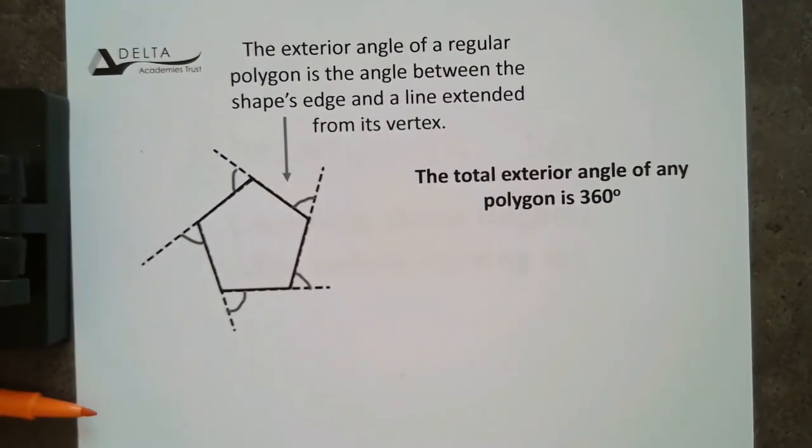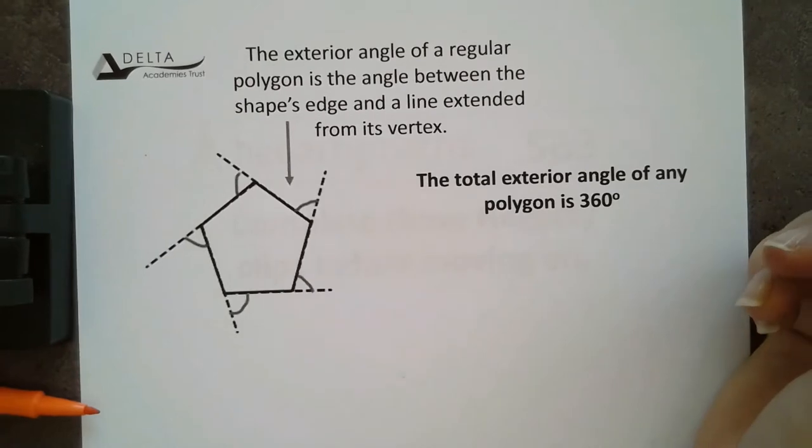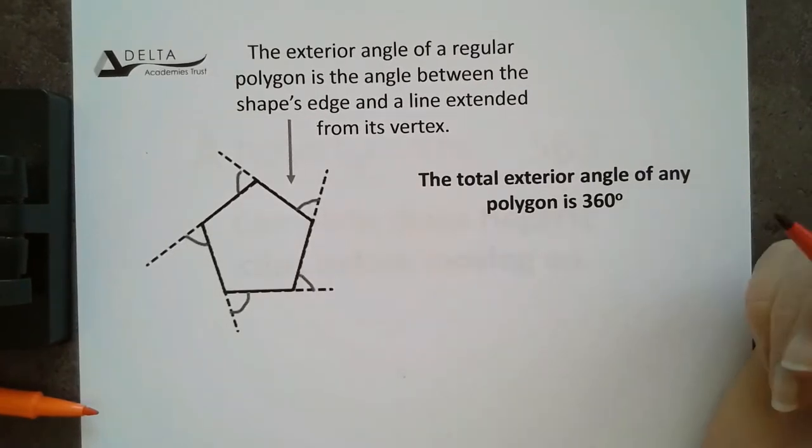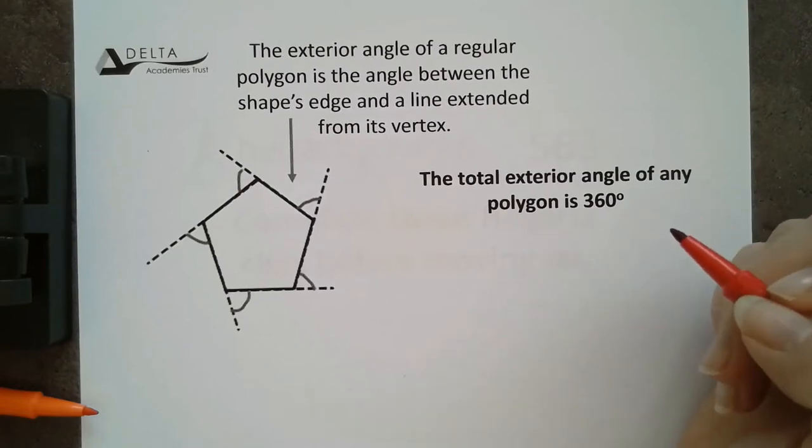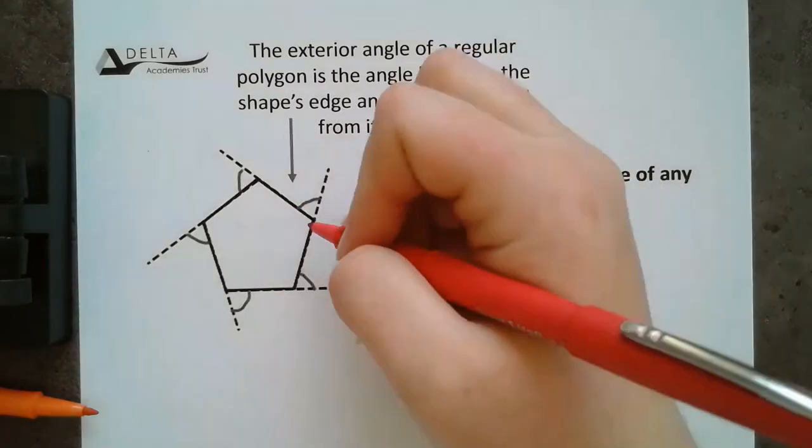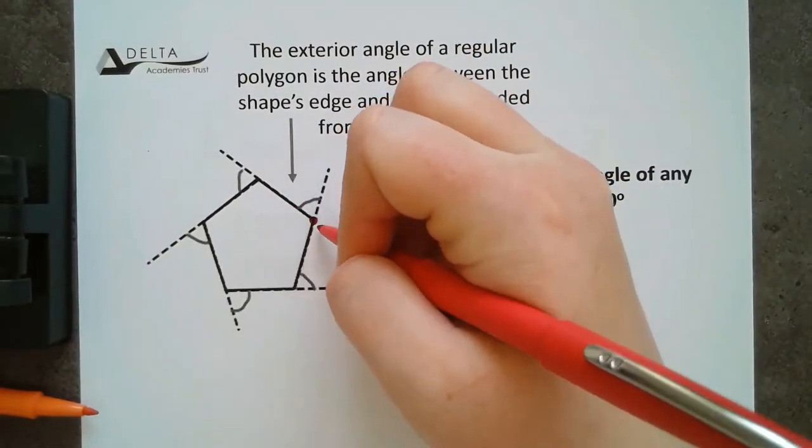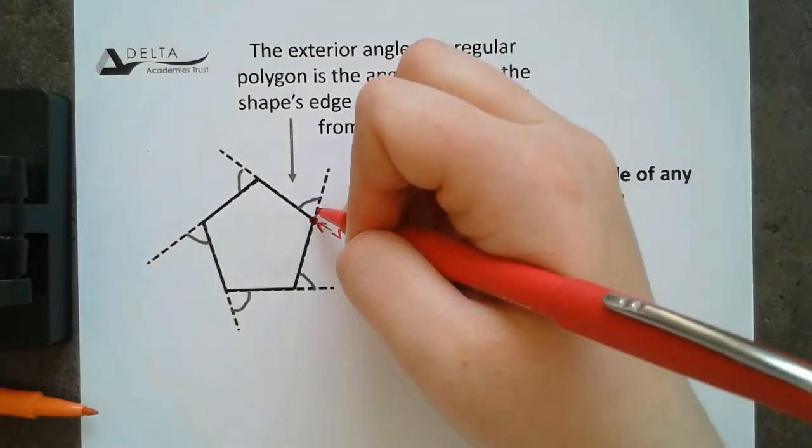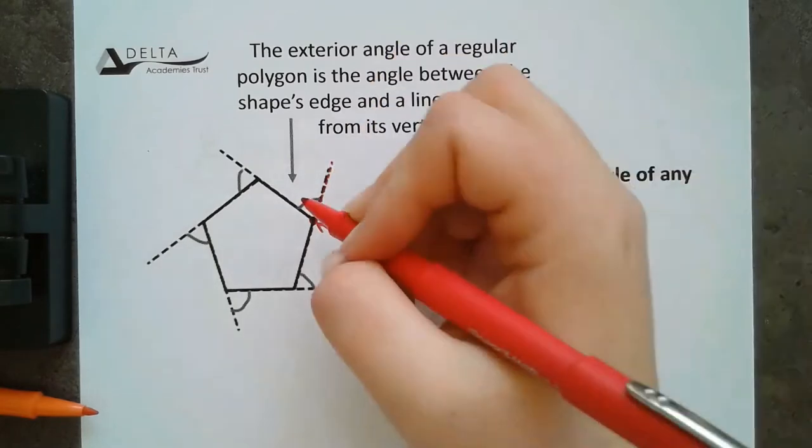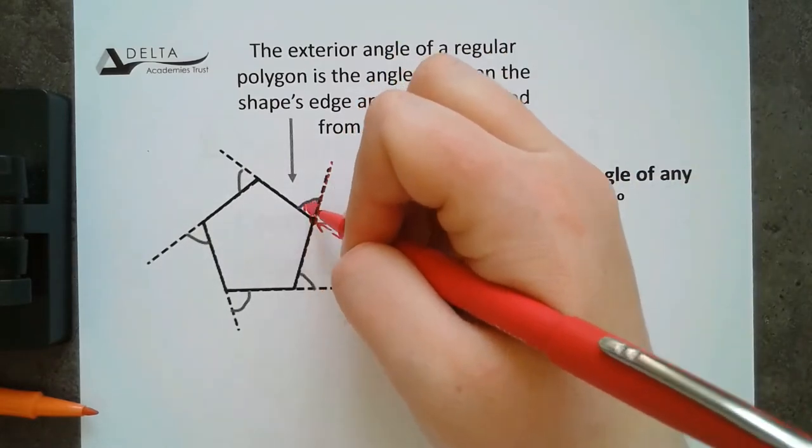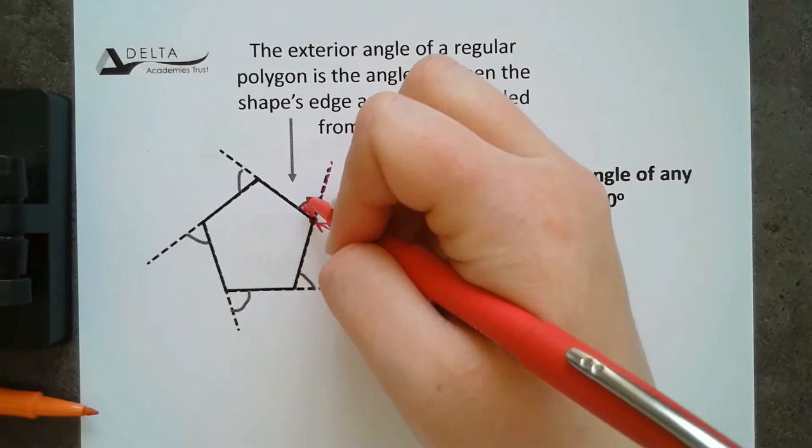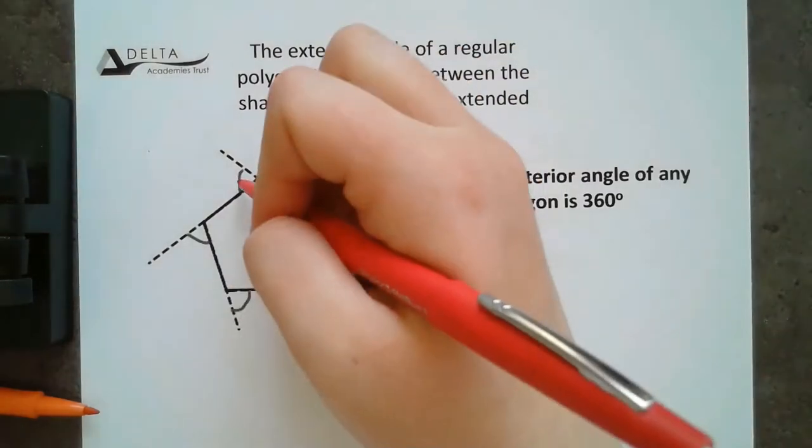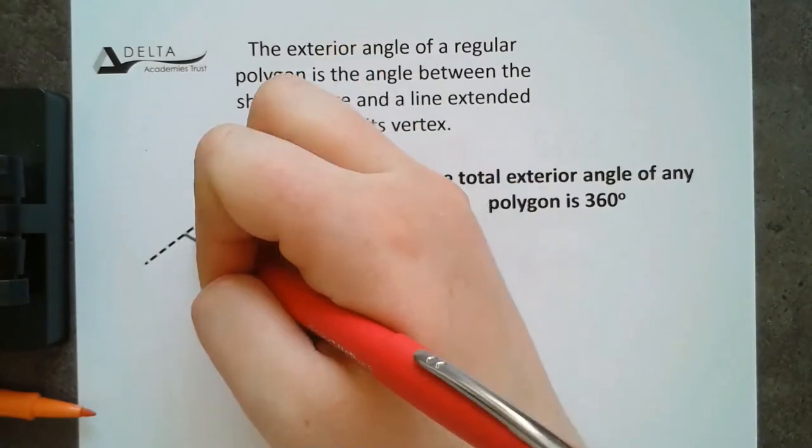So, exterior angles are where we're starting. Exterior angles are the angle between the shape's edge and then a line extended from the vertex. That sounds incredibly complicated. All it means is that if I was to go to a vertex, that's a point here, and extend a line out that goes in the same way as the shape, it's this angle in between them, so where the shape is and the straight line that you've extended out. That can happen on every single vertex.